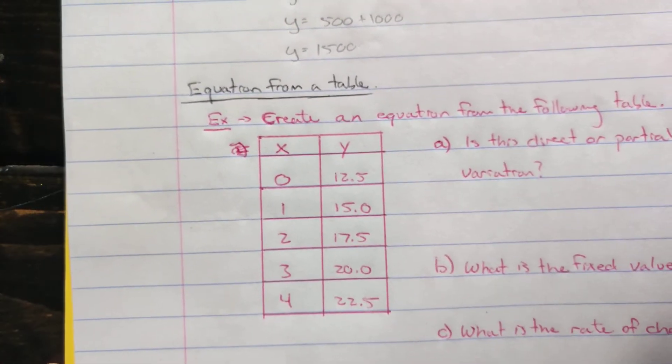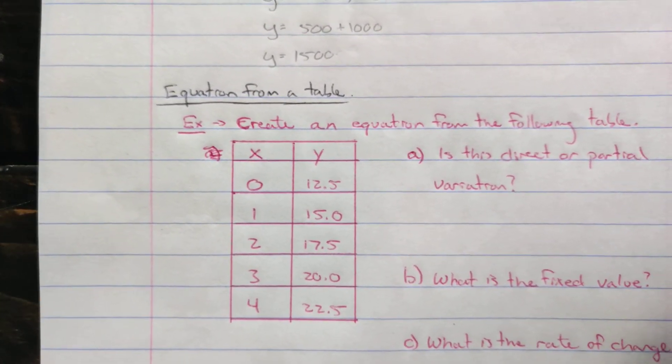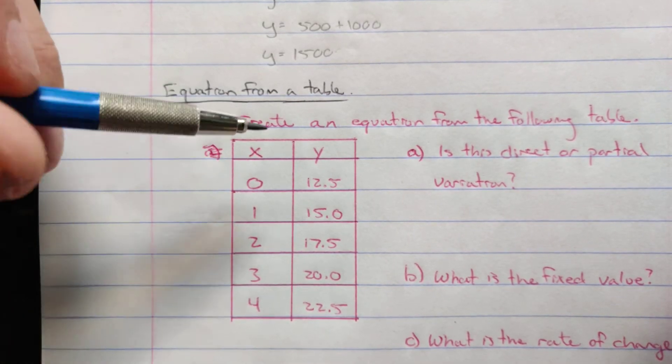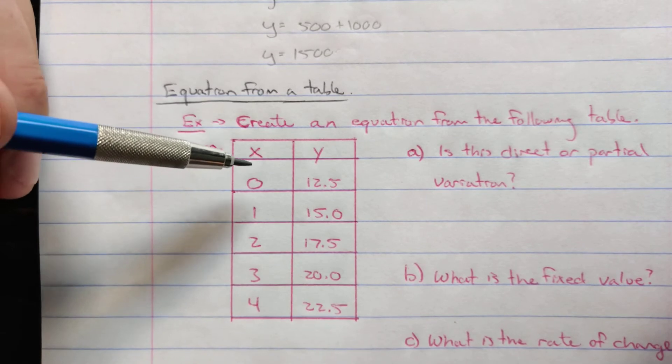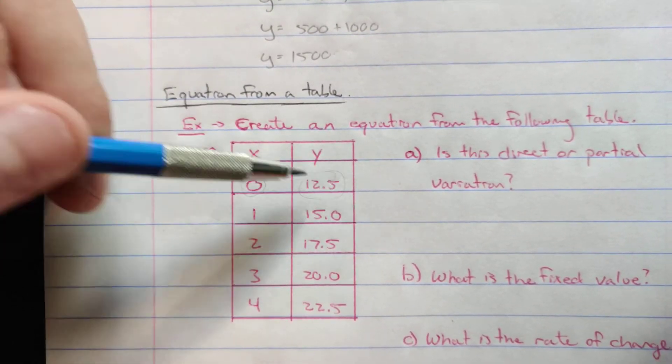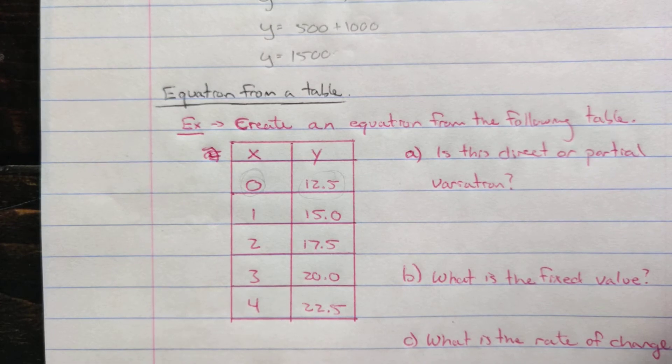We can also make the equation given a table. So we've made it using the graph. We can also make it using a table. If we look at this table, first thing we can look at is, is this direct or partial variation? Well, here's our x value of 0, and it crosses at the y-axis at 12.5. So this is not direct variation. This is partial variation.